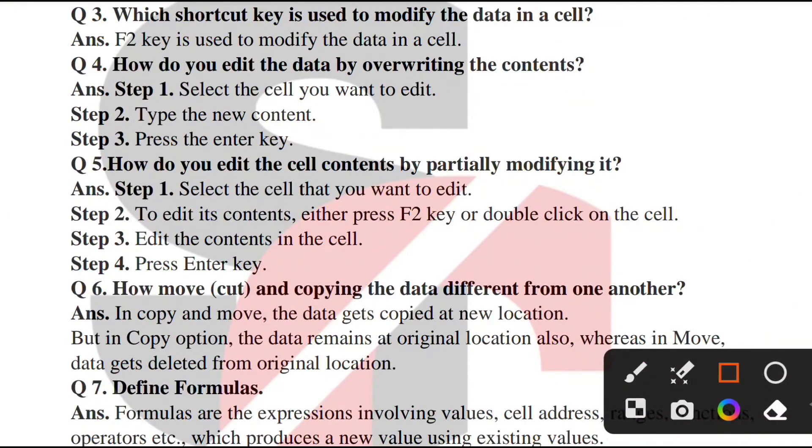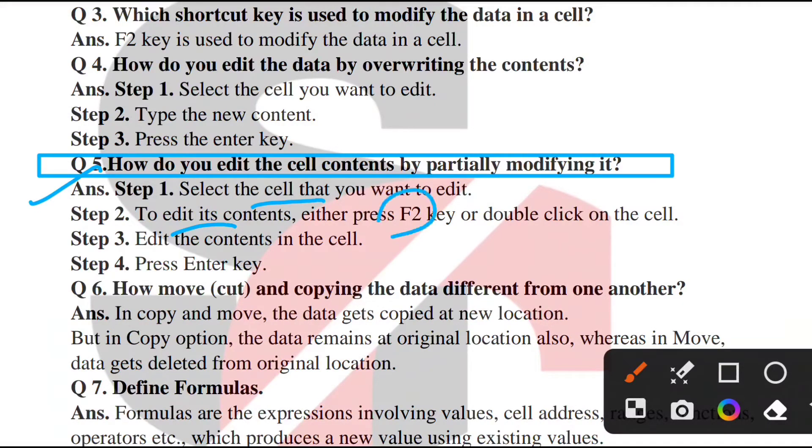Question 5: How do you edit cell contents by partially modifying it? Partially modify means you have written a word like Information Technology and want to make changes somewhere in between. The steps are: select the cell you want to edit. You can press shortcut key F2 or double-click. Then edit the content and press Enter key.